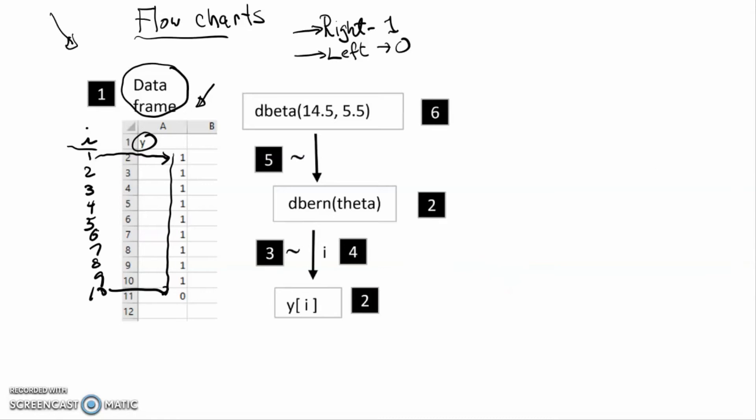Now we've got some arrows. You've got this arrow here. What does that mean? It means that the values of y arise from a Bernoulli distribution with some parameter that I'm going to call theta.